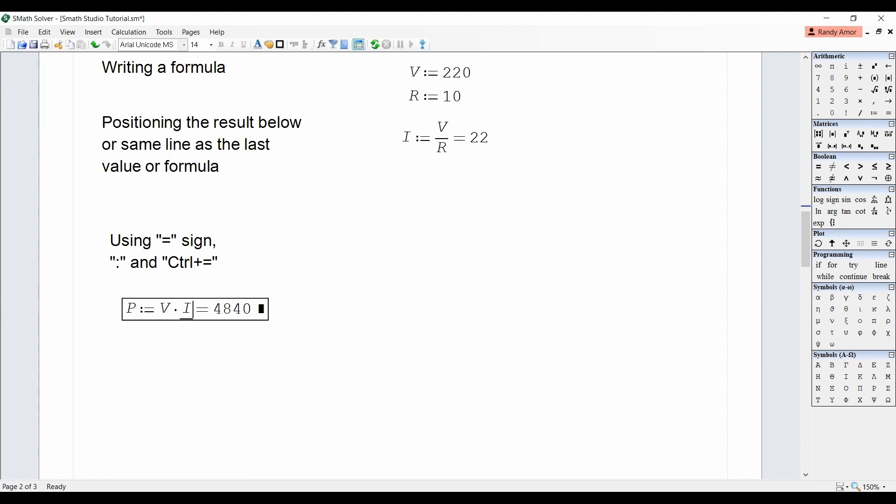Now, if we try to use a different formula, typing P equals again will simply give us the result of the previous calculation. However, if we type P colon, Smath Studio will change the colon to equal sign unless you type in a different formula. Type V squared over R equals and get the answer. Let's try it again. Using another formula in terms of current and resistance, type P colon I squared times R to get the answer.